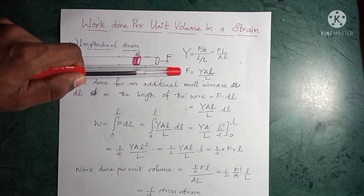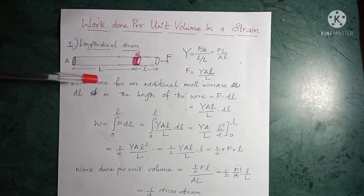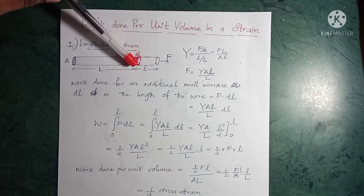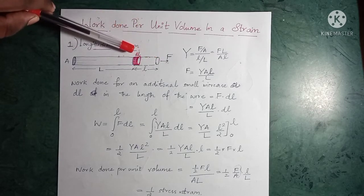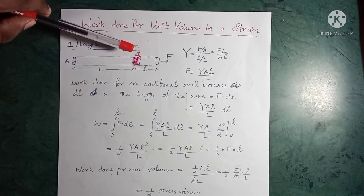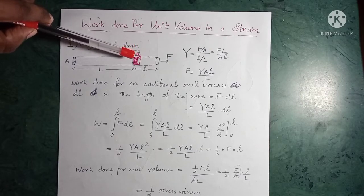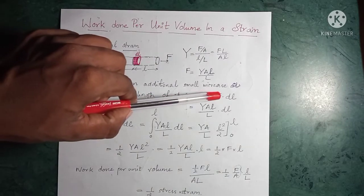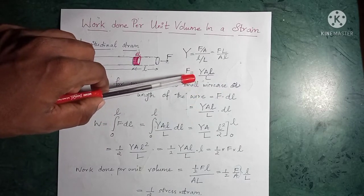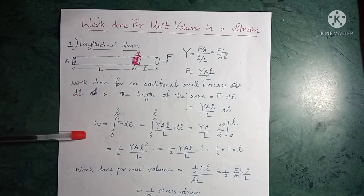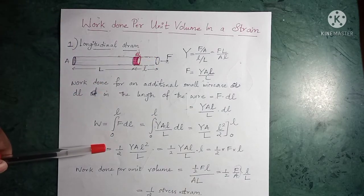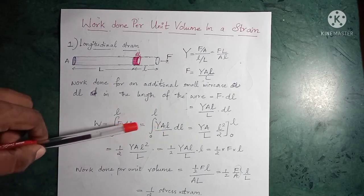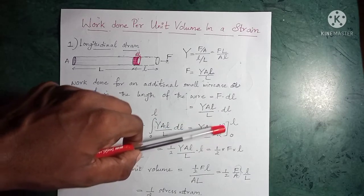To calculate the work done for the stretching over the whole length small l, we take an infinitesimal length dl and integrate over the whole length. The work done for an infinitesimal increase dl is force times dl. Substituting the expression for force, and since Y, A, and capital L are constants, we take them out and integrate l·dl, which gives l²/2 evaluated from 0 to l.